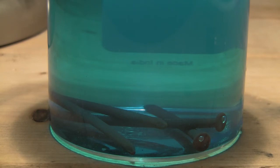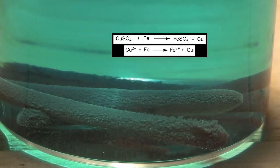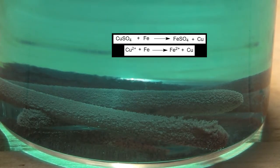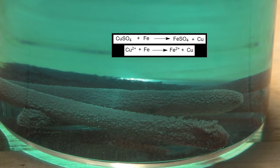The reaction is seen to start by turning the nails a black color before small fluffs of copper crystals start forming. The reaction is occurring as shown here. Copper sulfate, when dissolved, forms copper ions. They react with iron metal in a single displacement reaction to form iron sulfate and copper metal.